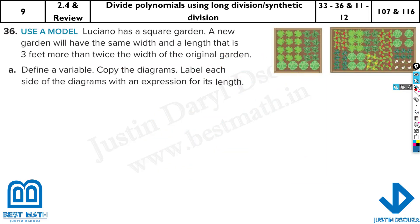A real world problem. Luciano has a square garden. A new garden will have the same width and the length. It's a square garden. They have not given us what is the dimension. So, before we go ahead, let's assume this to be x. Then, length and width are same, x and x. But it has same width. So, this is also x over here. But the length is different. It is 3 feet more than twice the width. 3 feet more means it's plus 3. Twice the width, 2x. So 2x plus 3.